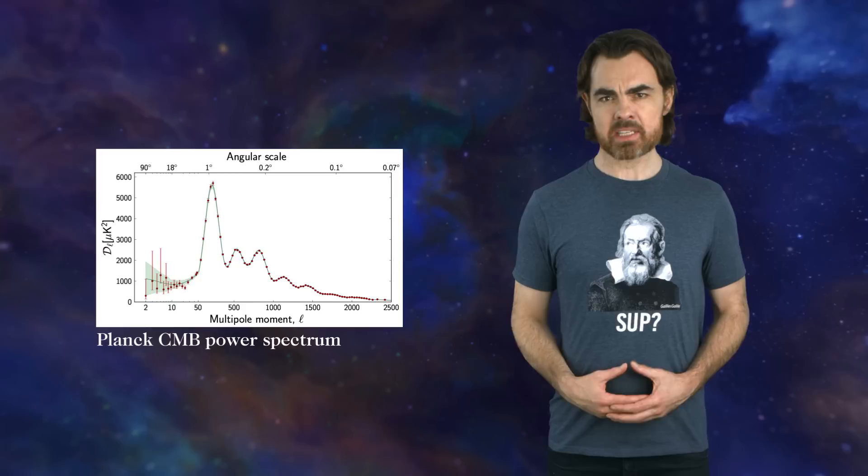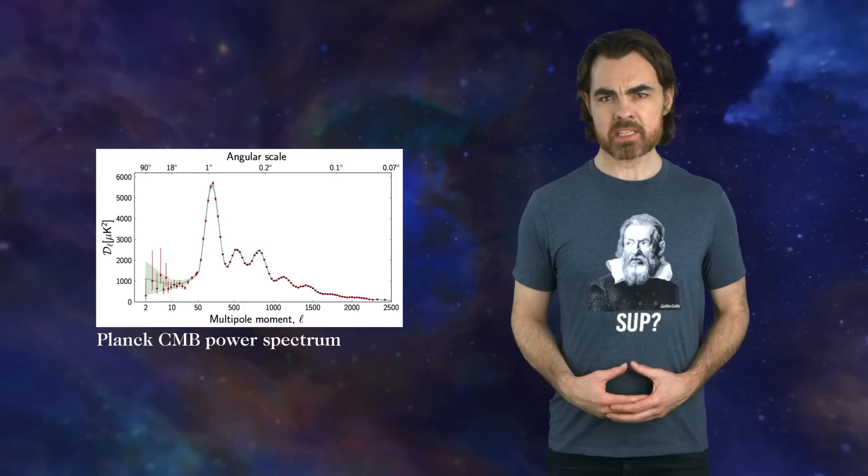the CMB was released. This in turn depends on the density of matter and radiation, as well as the expansion rate of the universe in that early epoch. So how do you get the Hubble constant, the current expansion rate, from all of this?